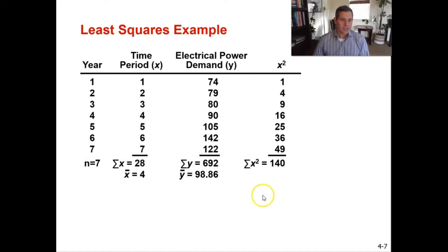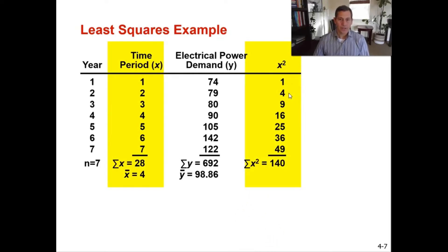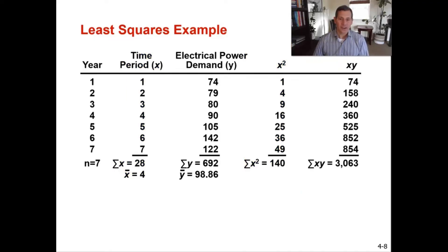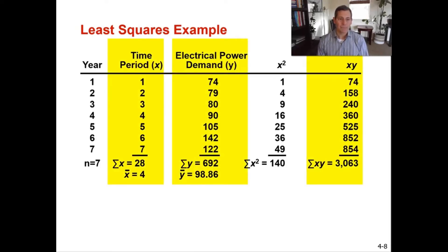Now calculate x-squared: take each time period and square it. One squared is 1, two squared is 4, three squared is 9, four squared is 16, and working down to seven squared which is 49. The sum of all x-squared values equals 140. Then calculate xy by multiplying each time period by its corresponding demand: 1 × 74 = 74, 2 × 79 = 158, and so on. The sum of xy equals 3063.